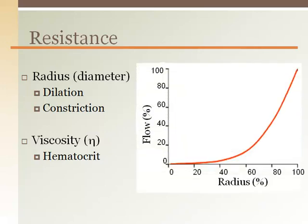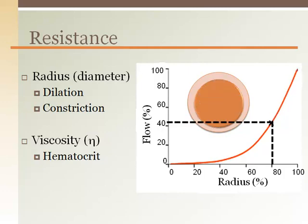By far the most important and variable factor is the radius. Because radius affects resistance by a factor of 4, even a small change in vessel radius has a profound impact on flow. Just reducing the radius by 20% cuts flow by more than half. When vessels constrict, the heart must increase ejection pressure to avoid such a reduction in blood flow. Patients with hypertension are treated with medications to minimize vasoconstriction and resistance so the heart can push blood at lower pressures, reducing blood pressure and cardiac workload.